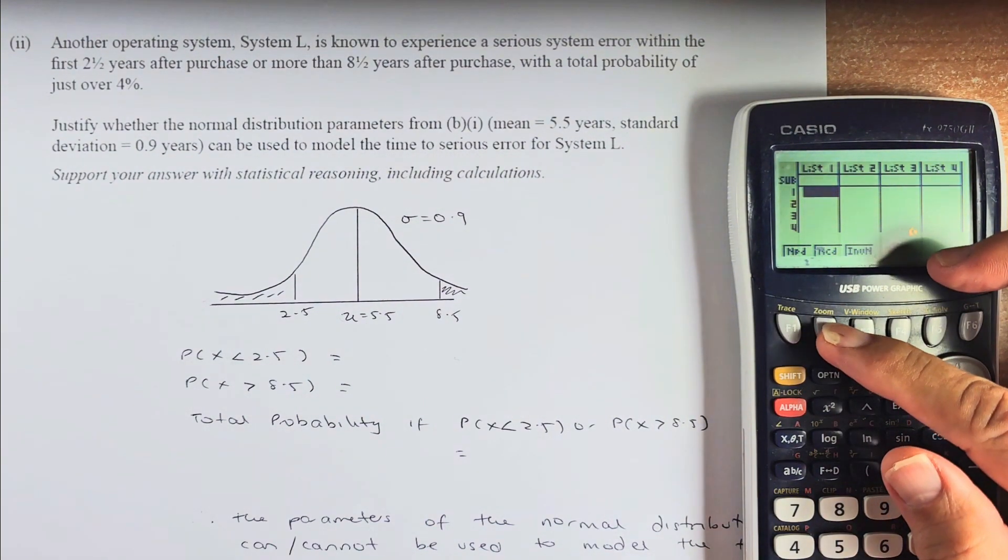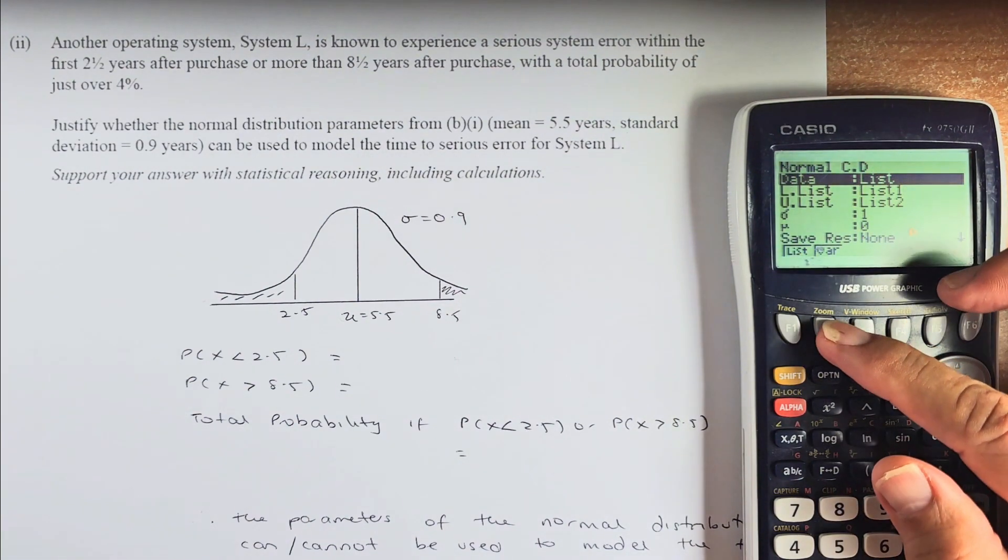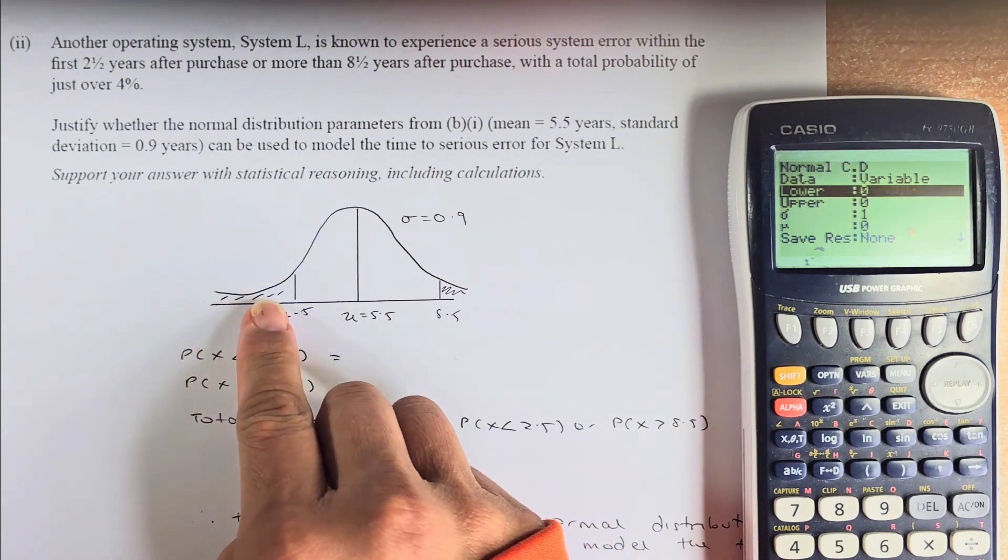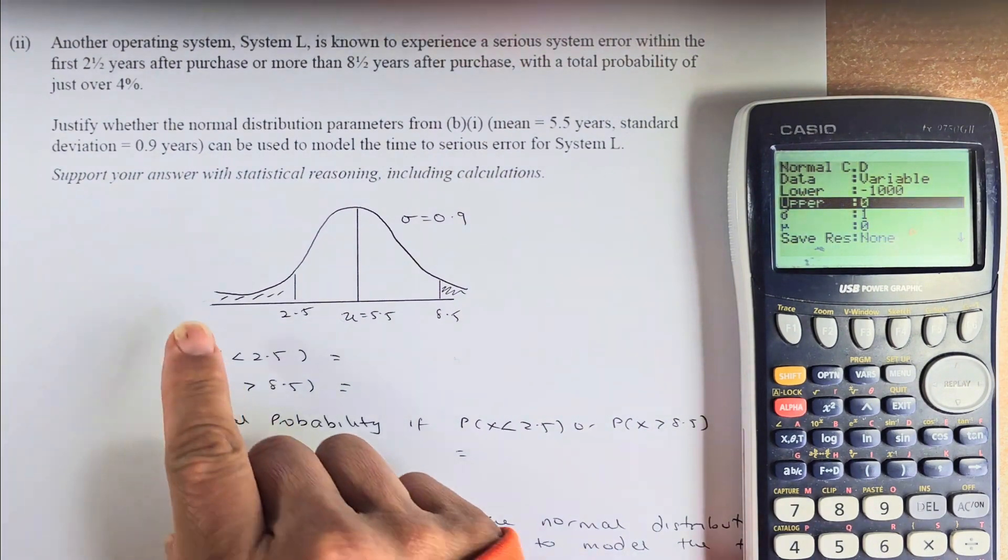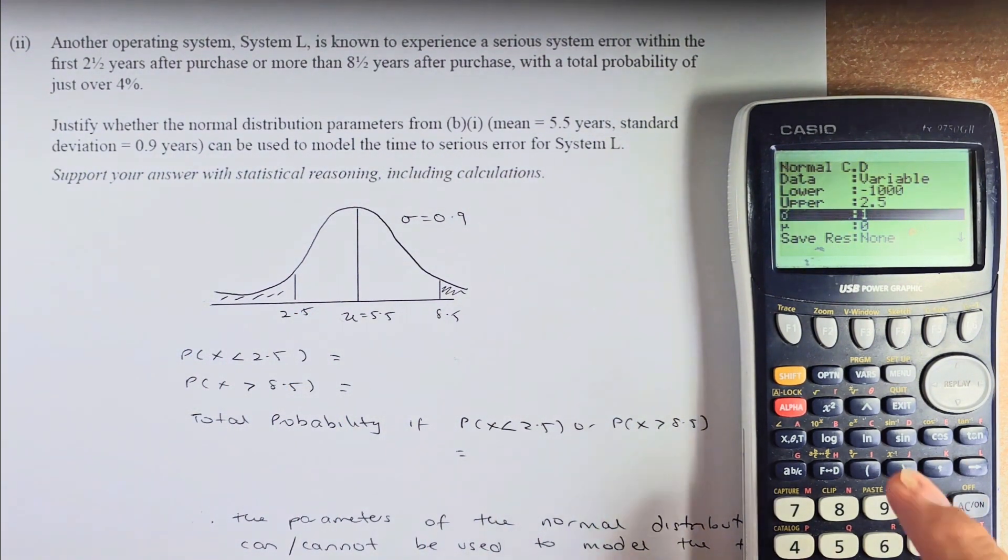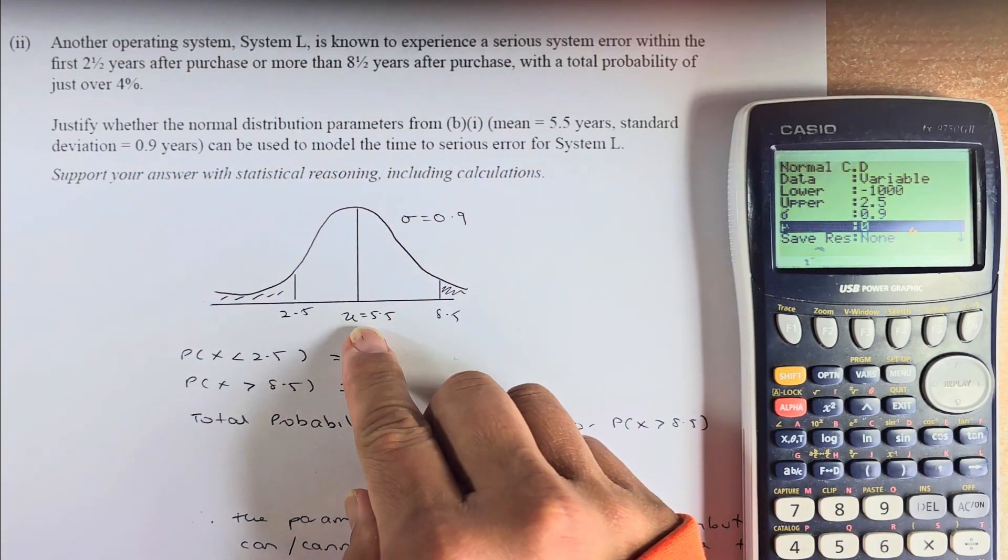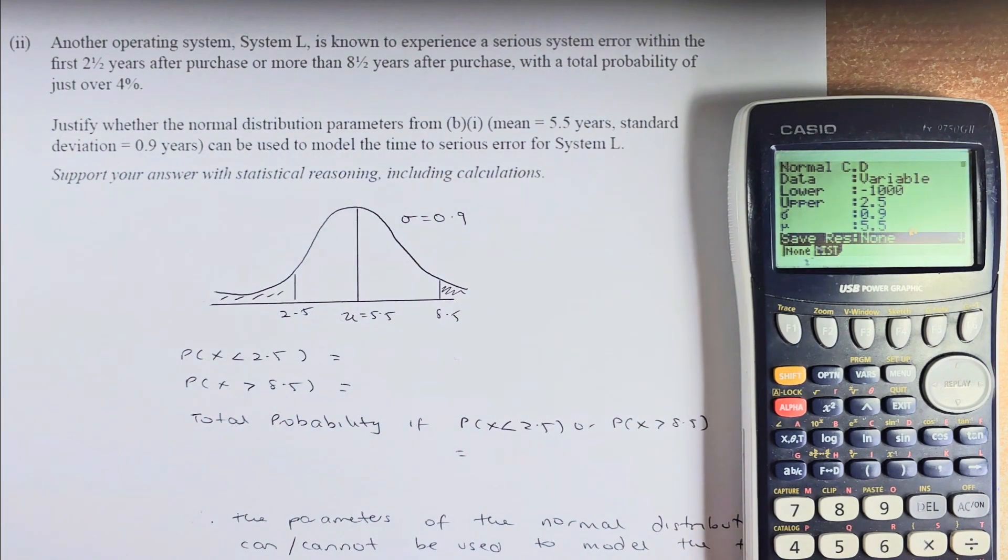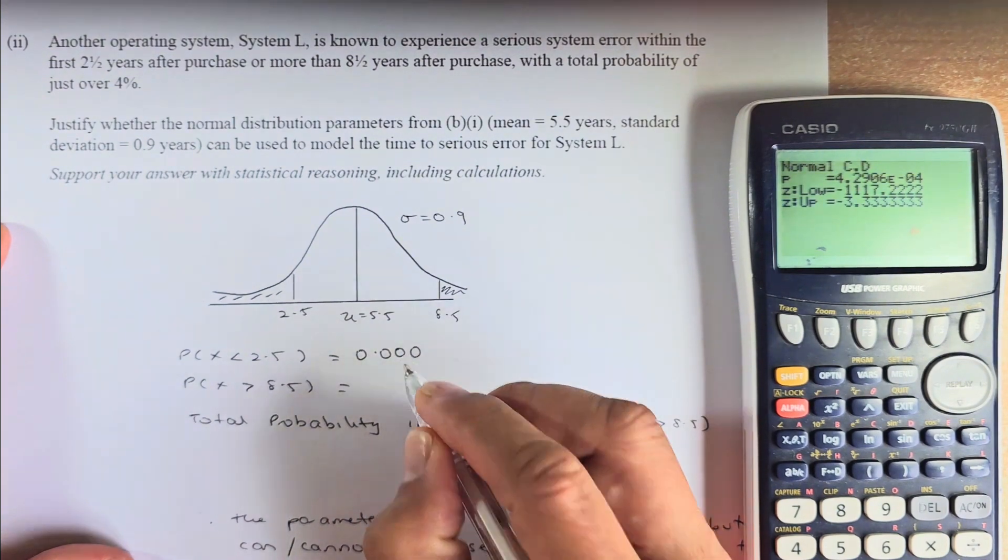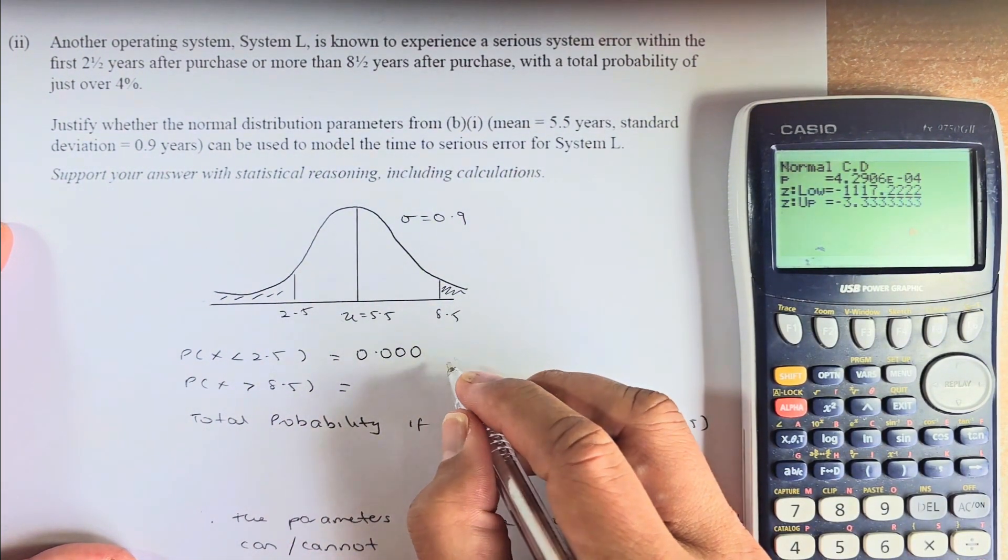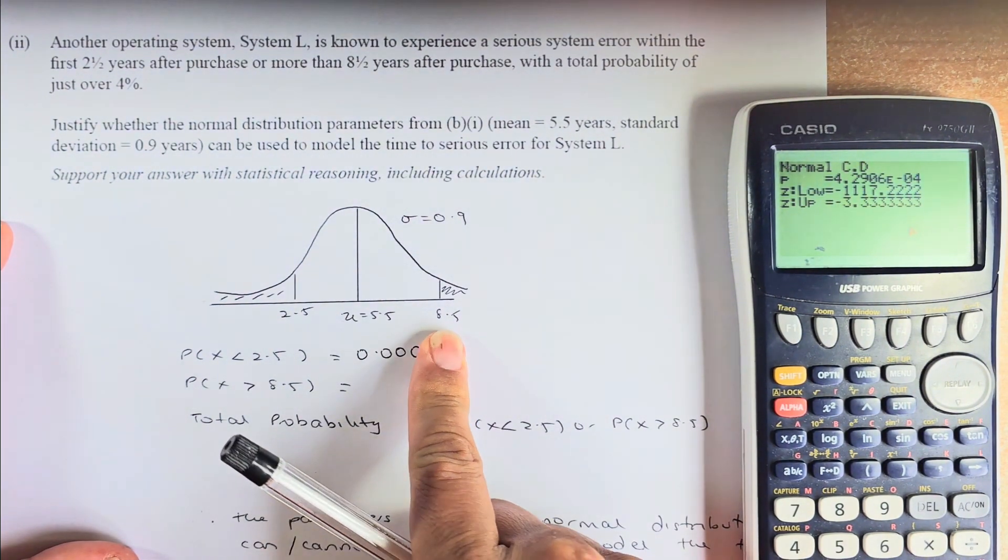Lower is where it starts. We put minus 1,000, execute. Upper is where it ends, 2.5, execute. Your sigma is going to be 0.9, execute. And your mu is going to be 5.5. The mean is 5.5, execute. And the answer is 0.000 minus 4 means there are 4 zeros and they put 429. Next we do the same thing for greater than 8.5.